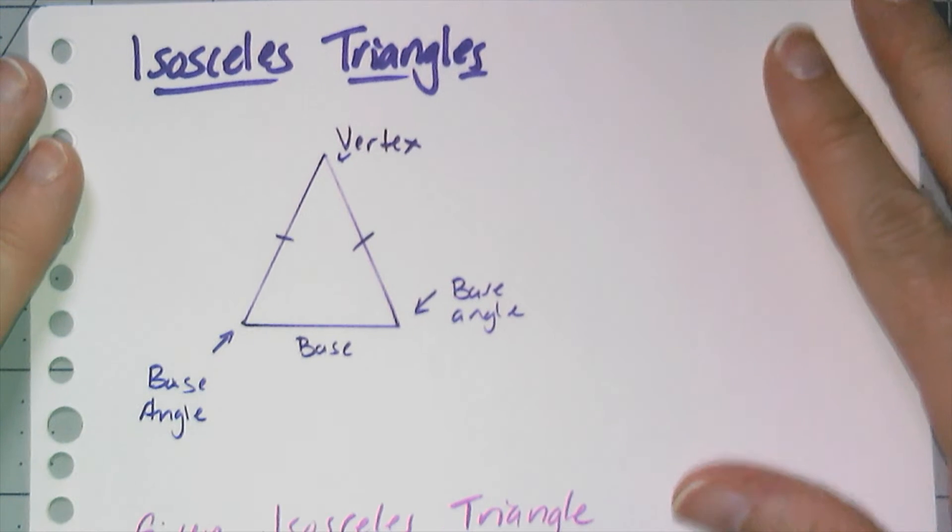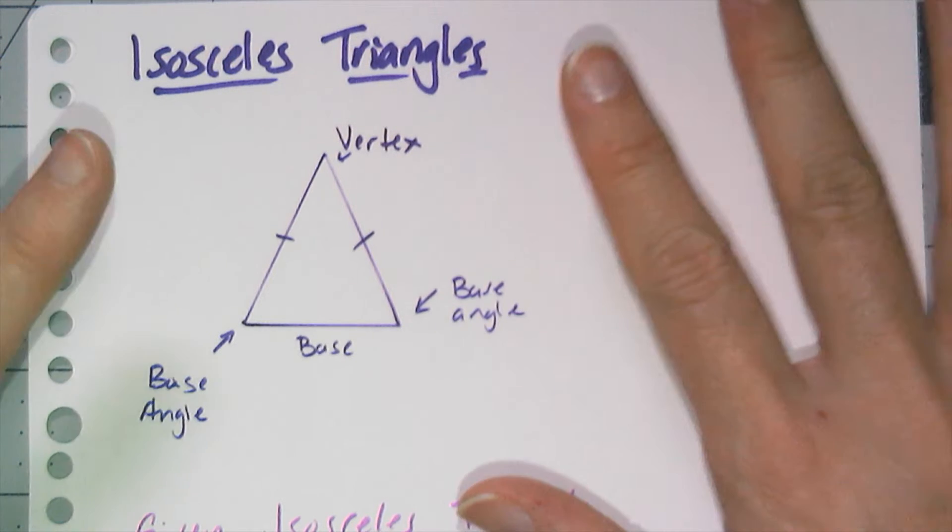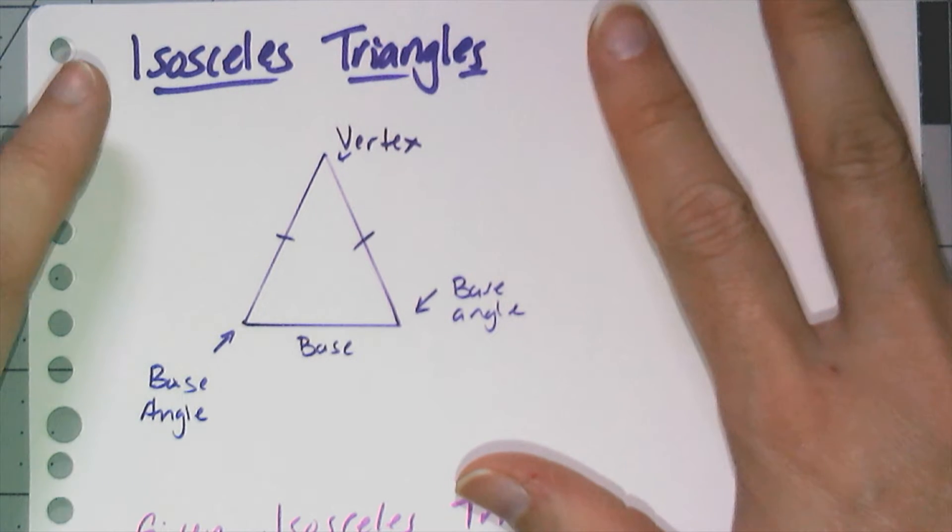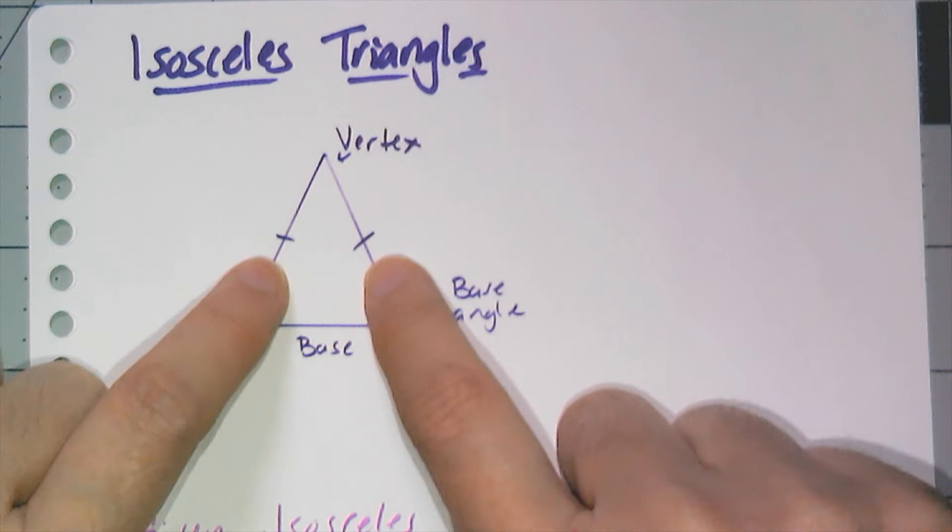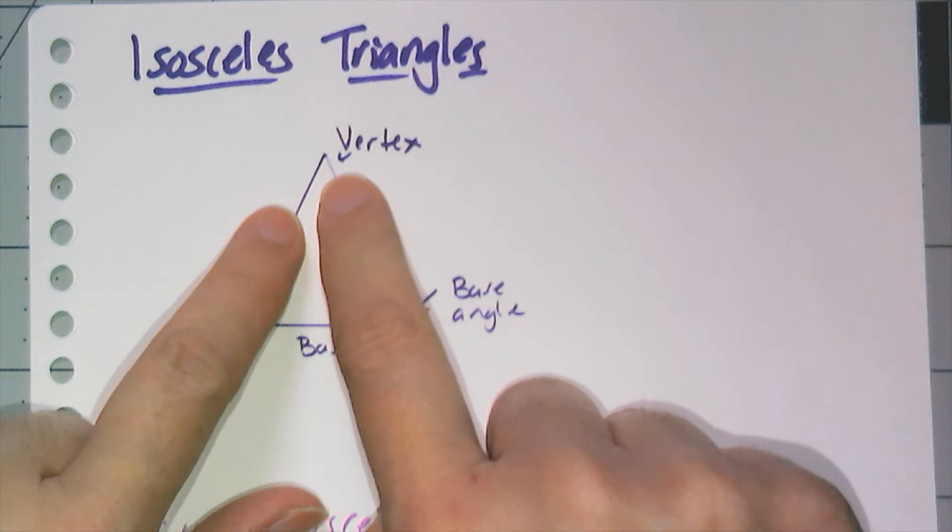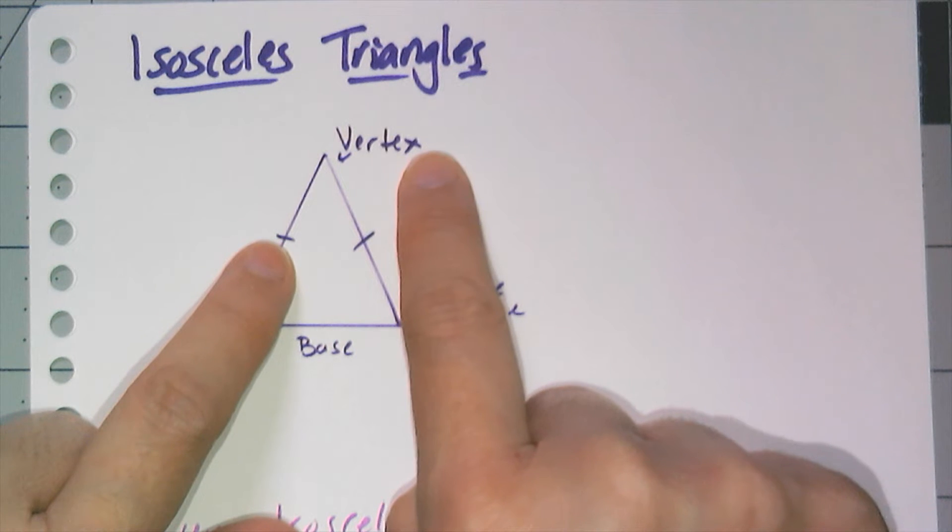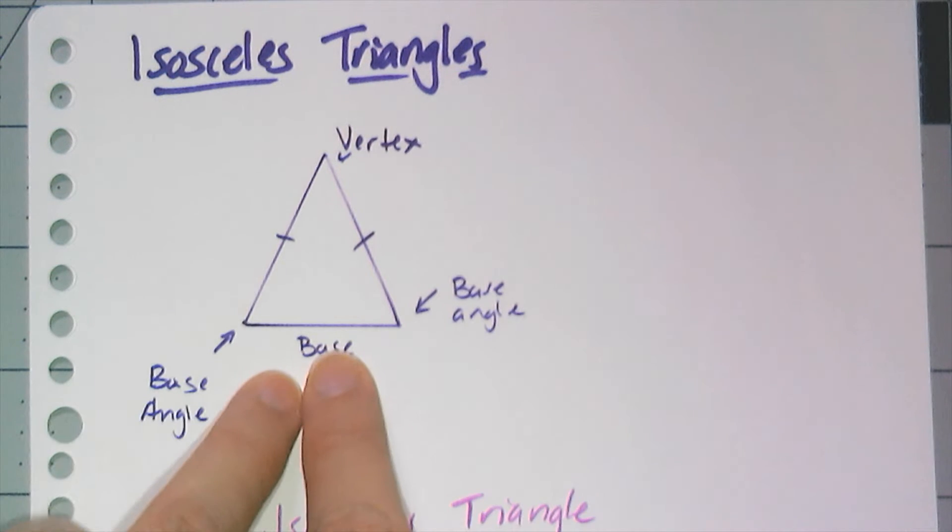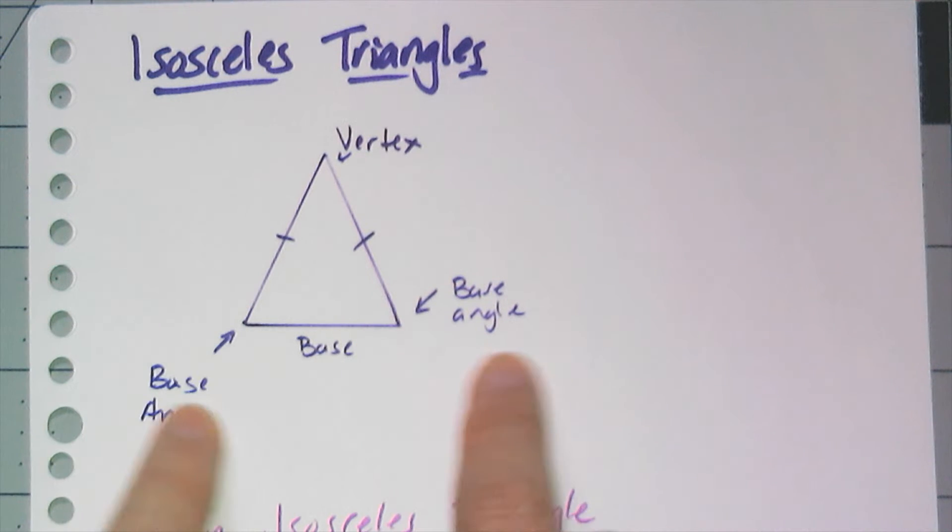But first, before we talk about that, let's review some vocabulary about the parts of an isosceles triangle. We know isosceles triangles have two congruent sides, and the angle formed by those two sides is called the vertex angle. The side opposite the vertex angle is called the base, and the two angles at the base are called base angles.